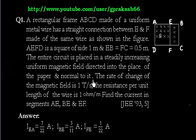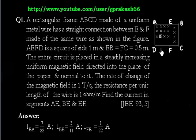Let me discuss this problem. We have a rectangular frame ABCD made up of metal wire, with a straight connection between E and F. AEFD is a square with a side length of 1 meter, and the length EB equals FC, that is 0.5 meter.